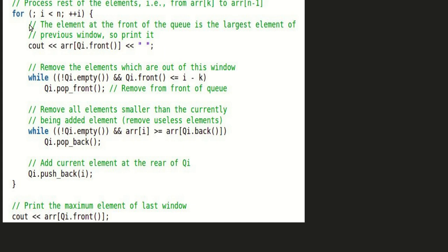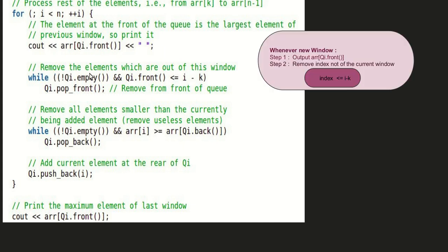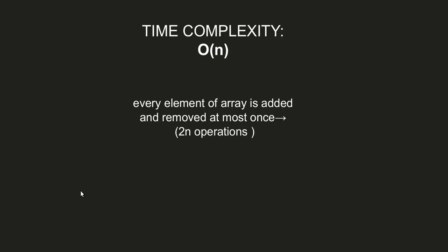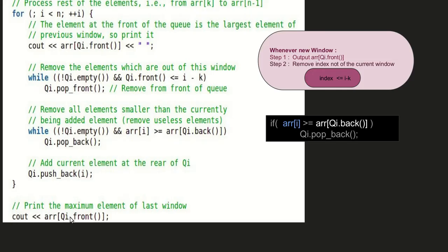For the rest of the windows, we start by outputting the front element of the deque. Then, while the deque is not empty and deque.front() <= i-k, we remove elements not in the current window using deque.pop_front(). Then, as usual, while the deque is not empty and array[i] >= array[deque.back()], we pop from the back. Finally, we push the current element's index, and after all iterations, we output array[deque.front()].